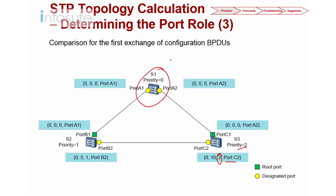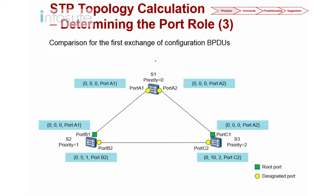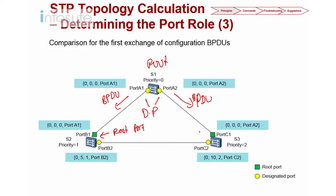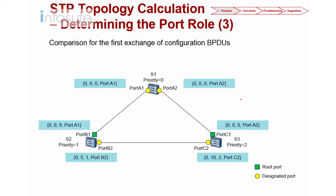Now we have our root bridge, and Switch 2 and Switch 3 are non-root bridges. Once you've identified the root bridge, remember that the root bridge always has the designated port. The designated port is the one that actually sends out the BPDU. The opposite port on the non-root bridge is called the root port. So now you understand how to select the root bridge and how to determine the designated port and the root port.